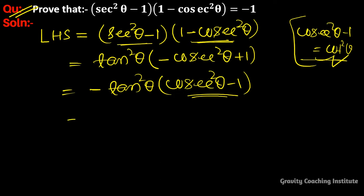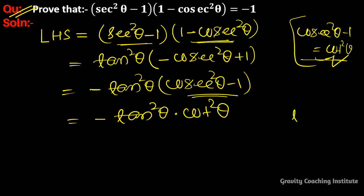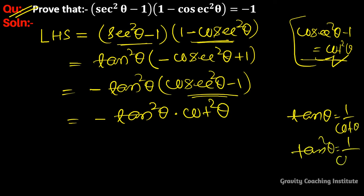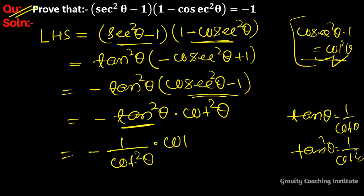So we have tan²θ into (-cot²θ). We know that tanθ = 1/cotθ, so tan²θ = 1/cot²θ. Therefore, (1/cot²θ) × cot²θ — the cot²θ cancels — giving us -1.